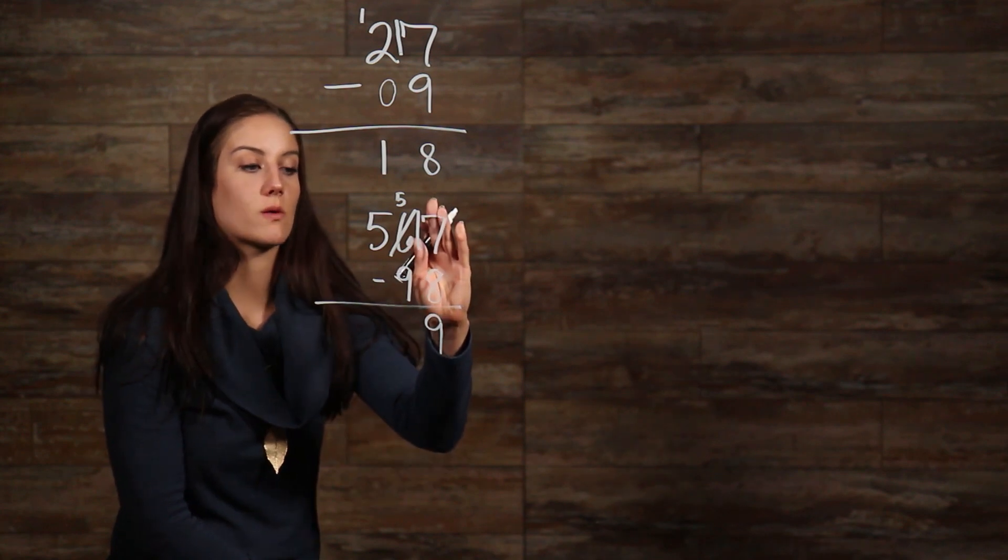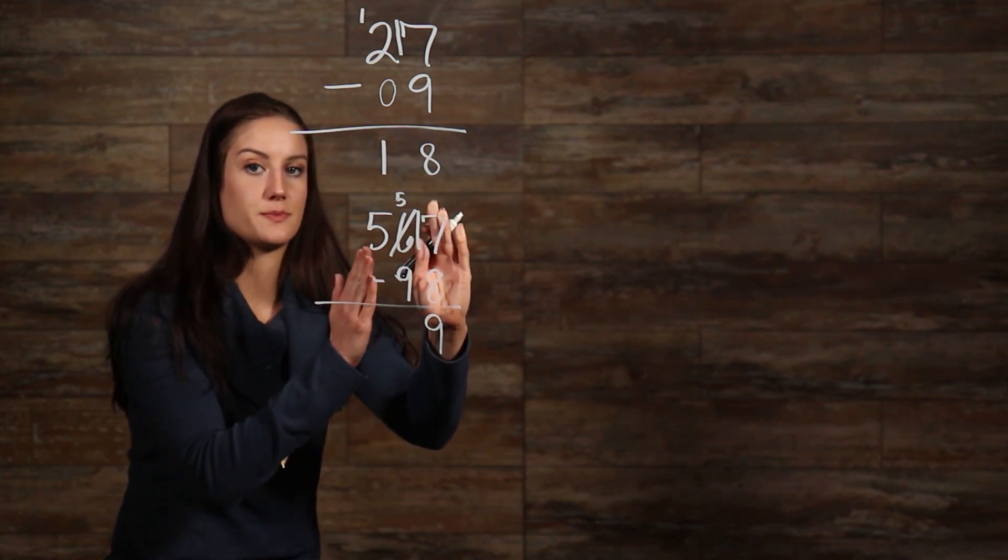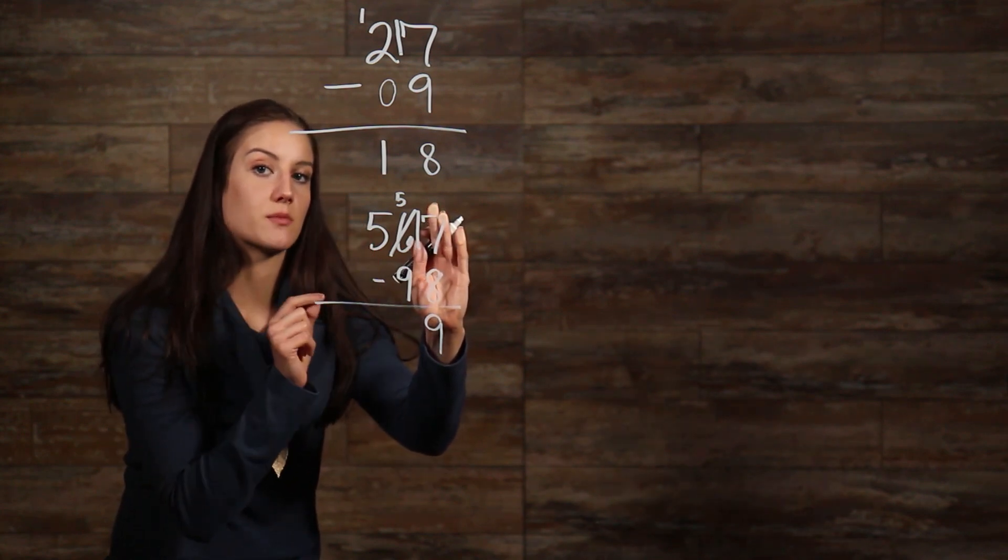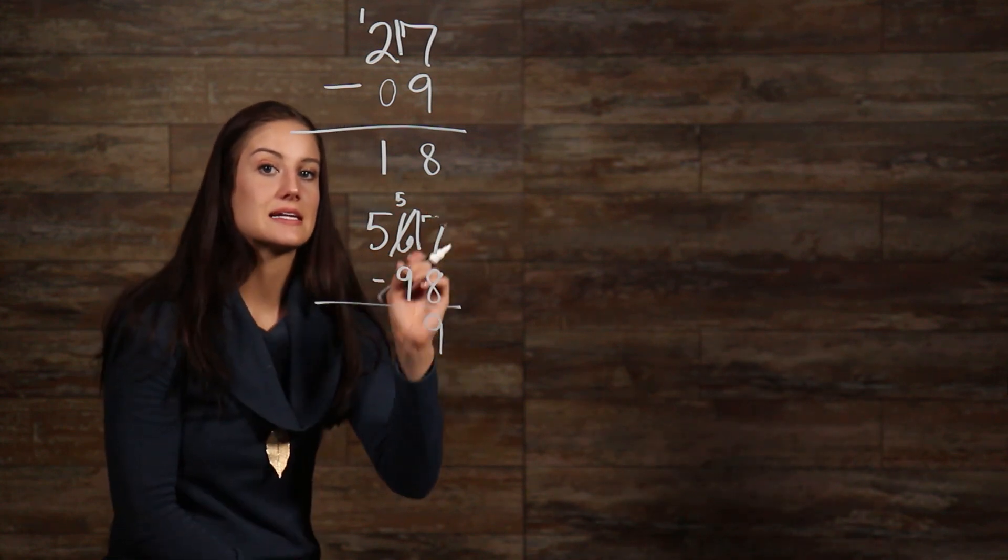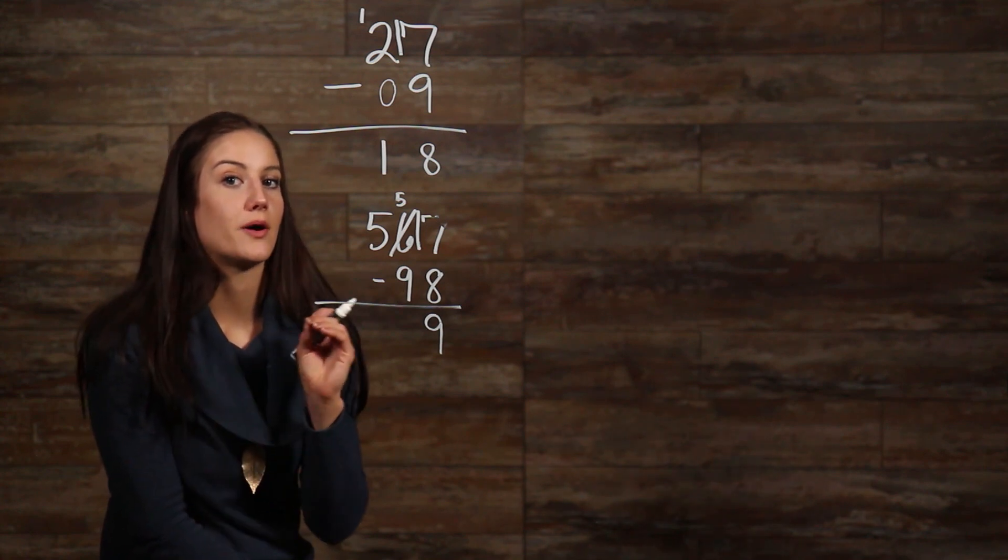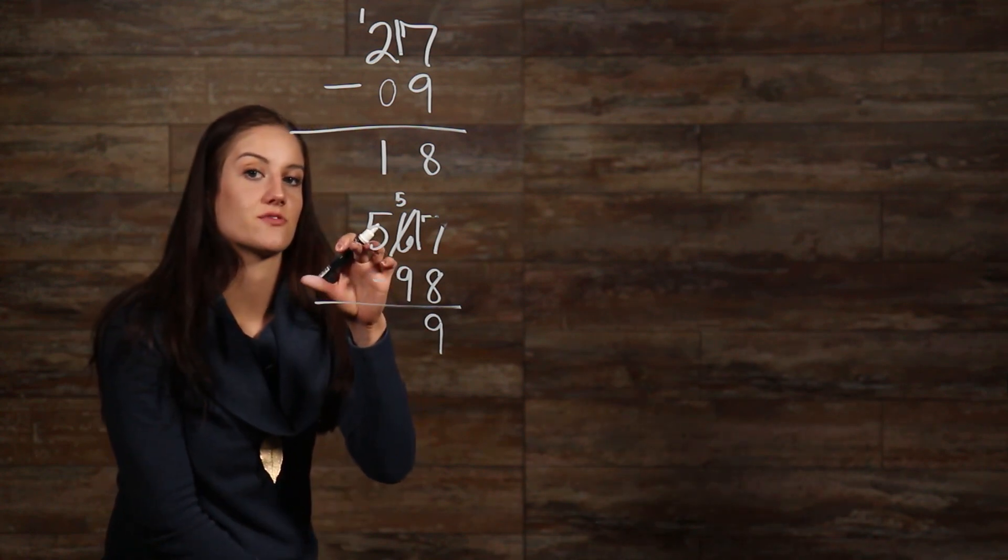Now, at this point, we are only worried about everything going on in our tens place. Only subtract numbers from their corresponding place values. So, now we have 5 minus 9. Since 9 is more than 5, we need to borrow from our hundreds place, so from our 5 over here.